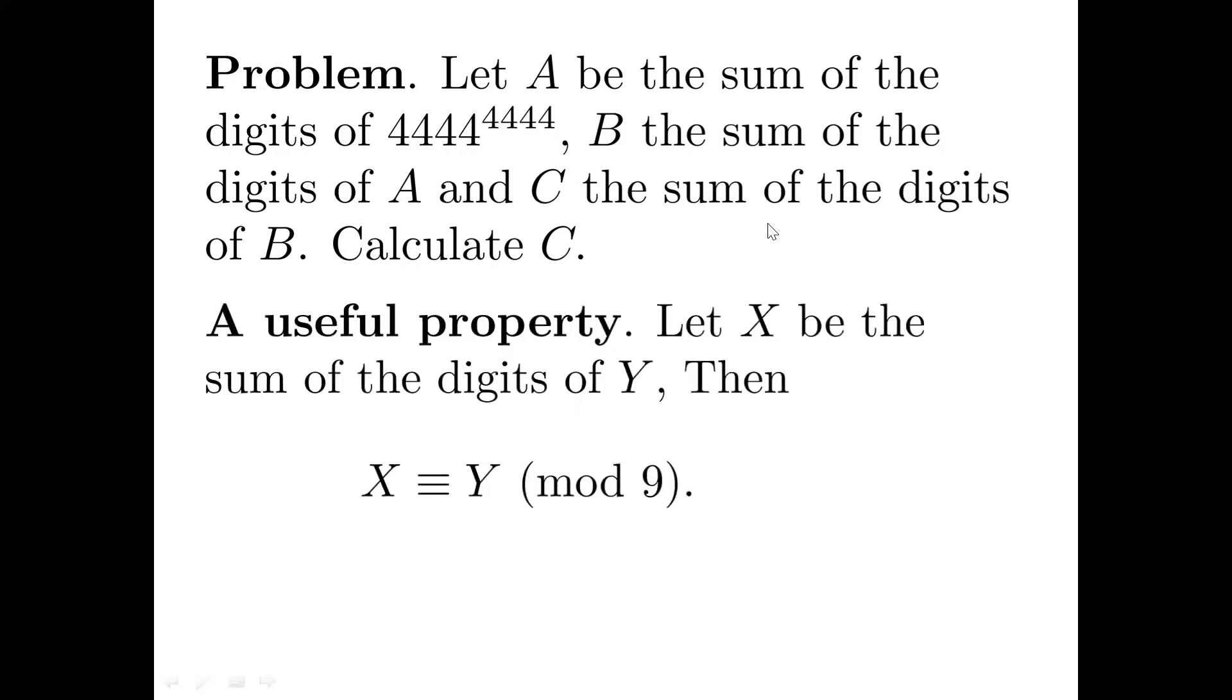We are going to use a useful calculation technique. If one number is the sum of the digits of another number, then these two numbers have the same remainder when they are divided by 9.